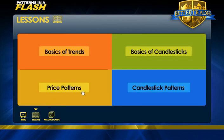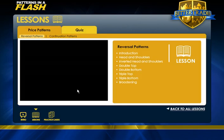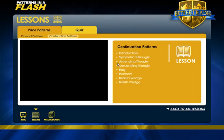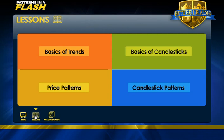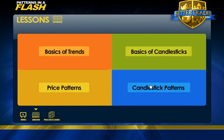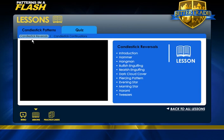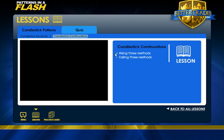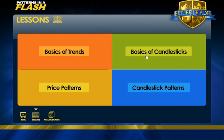Moving back to the lessons, I'm going to click on the Price Patterns, and you'll notice there are two sections: Reversal Patterns and Continuation Patterns. The quiz will cover both of those sections. We've also got the Basics of Candlesticks, which is a relatively short section. And then in the Candlestick Patterns, you've also got Reversal Patterns and Continuation Patterns — also a very short section with very few candlestick continuation patterns. Once you're done with the reversals and continuations, there's a quiz there as well. That is the lesson section of this tool.